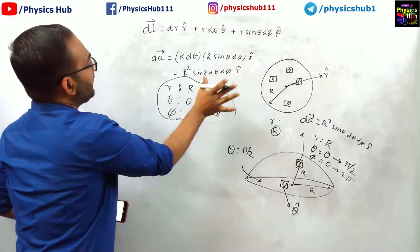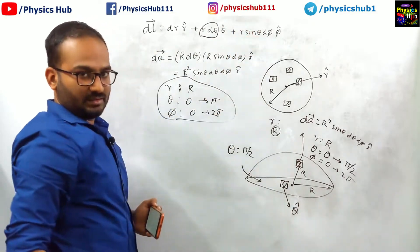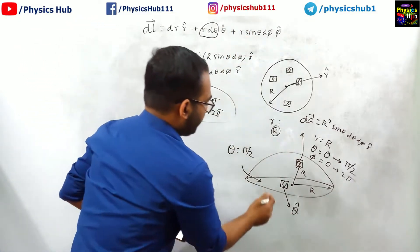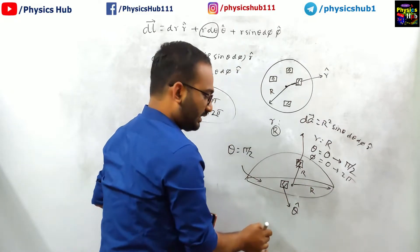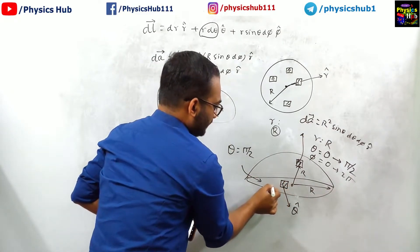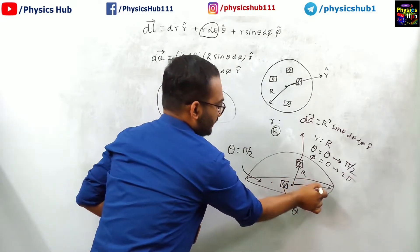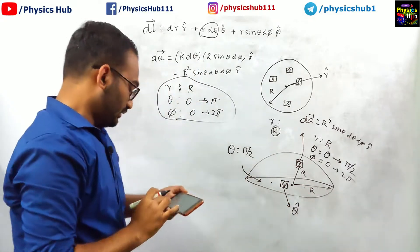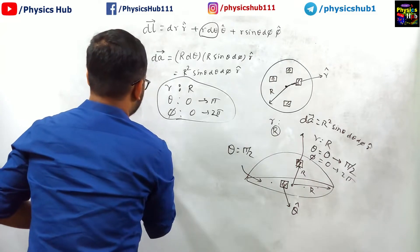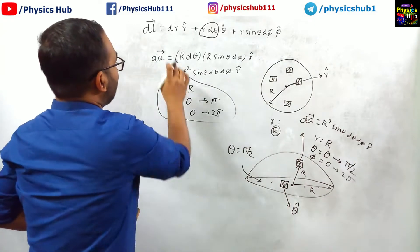And look at this, if theta is fixed, this term will be 0, only this term and this term will be contributing. You see, for this r is also not fixed, r is a variable, not capital R, because you can take surface element here, you can take the surface element here and here, here, then your small r is changing. So what you can write for the area element, for this area element, we can write dA equals dr.